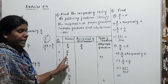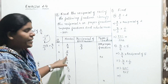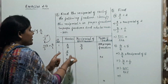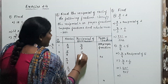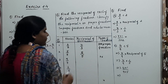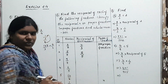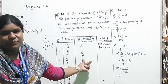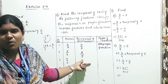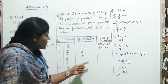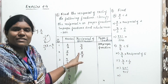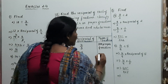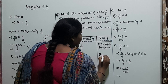The second example is 5/8. The reciprocal of 5/8 is 8/5. Now observe carefully — the numerator value 8 is greater than the denominator value 5. Therefore, this is also called an improper fraction.